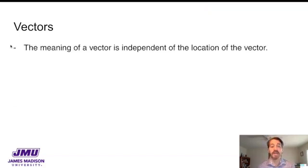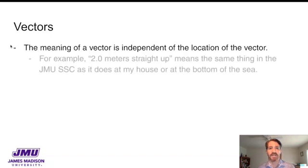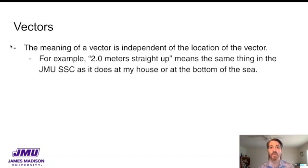A couple of points about vectors. The meaning of a vector quantity is independent of the location of the vector. And what I mean by that is, for example, if I say 2.0 meters straight up, the 2.0 is a number, the meters is a unit, the straight up is a direction, so that's a vector quantity. And it means the exact same thing in different locations. Two meters straight up is a concept that has the same meaning as it says here at the Student Success Center at James Madison University as it would at my house or at the bottom of the sea.